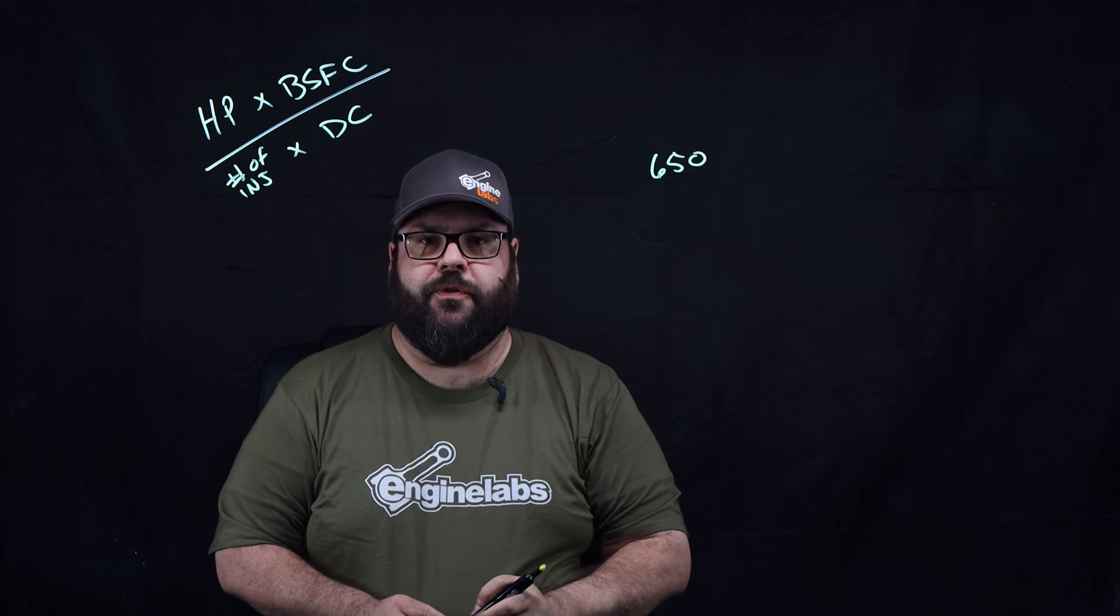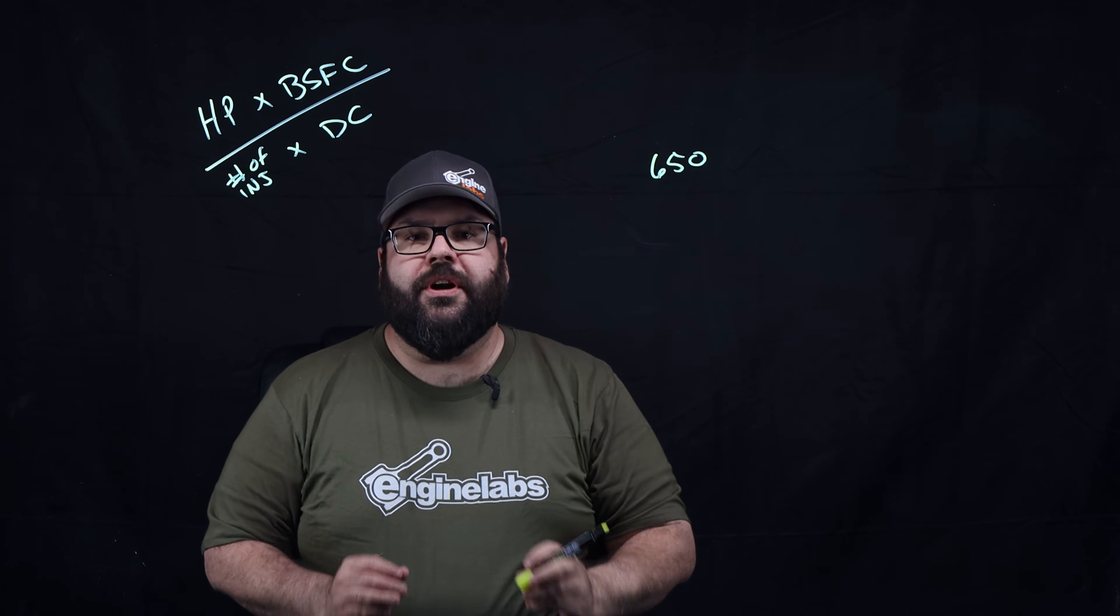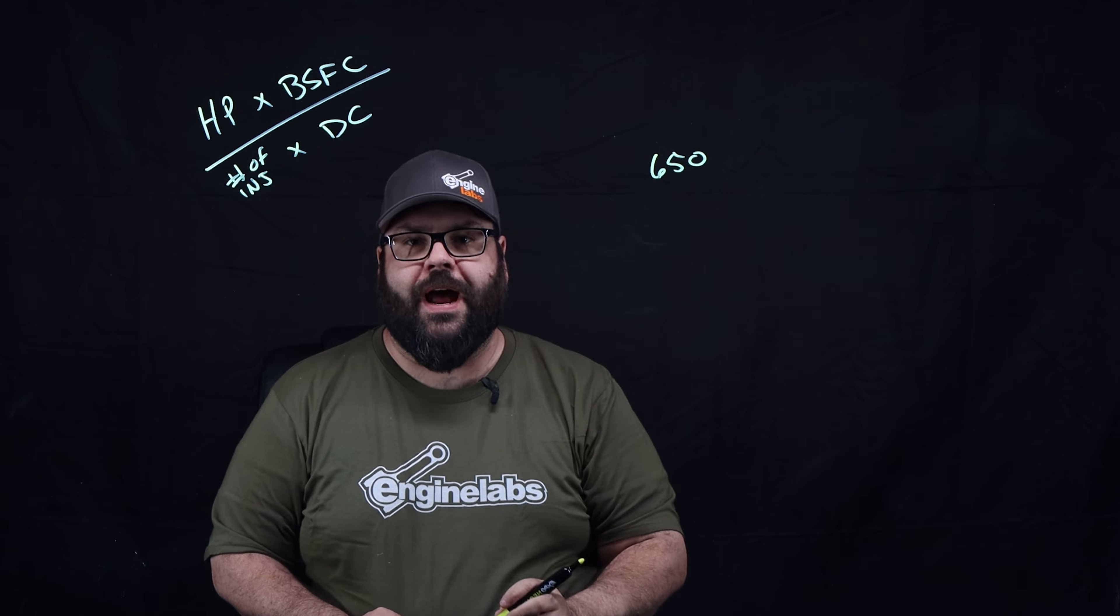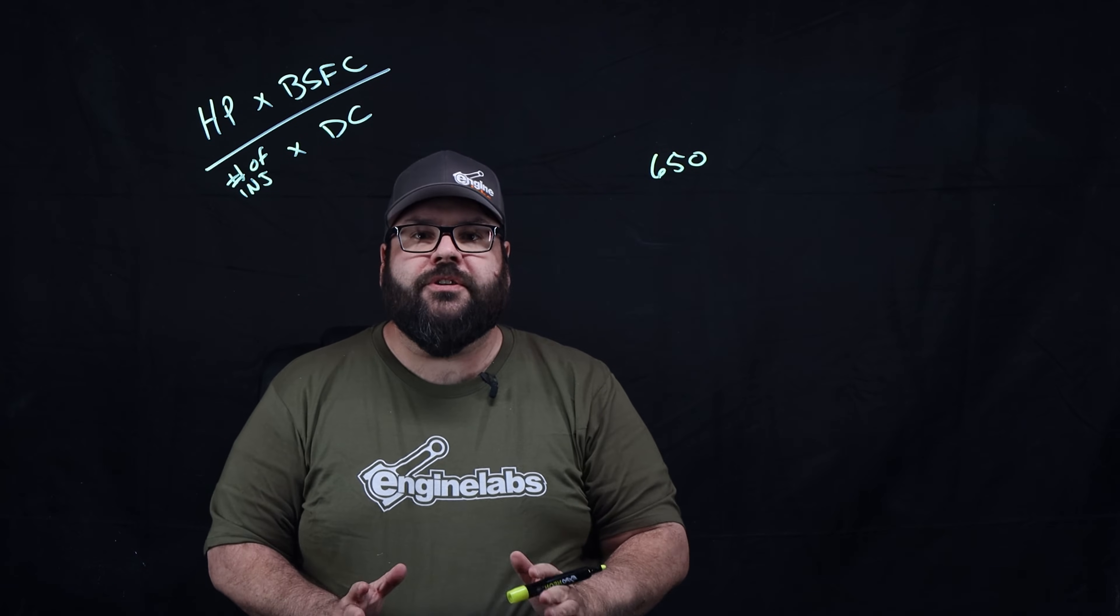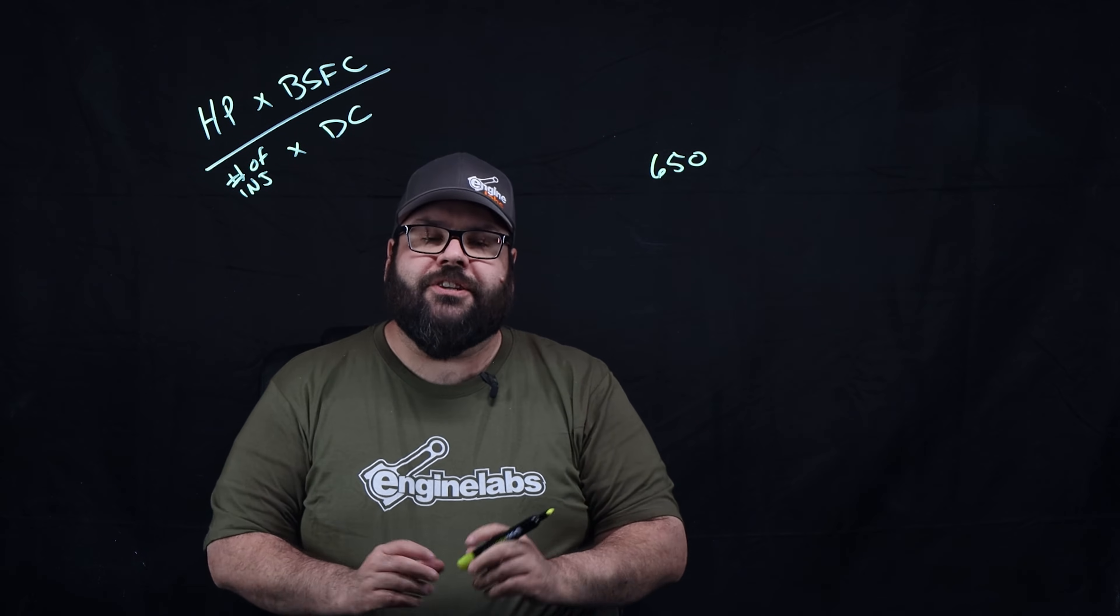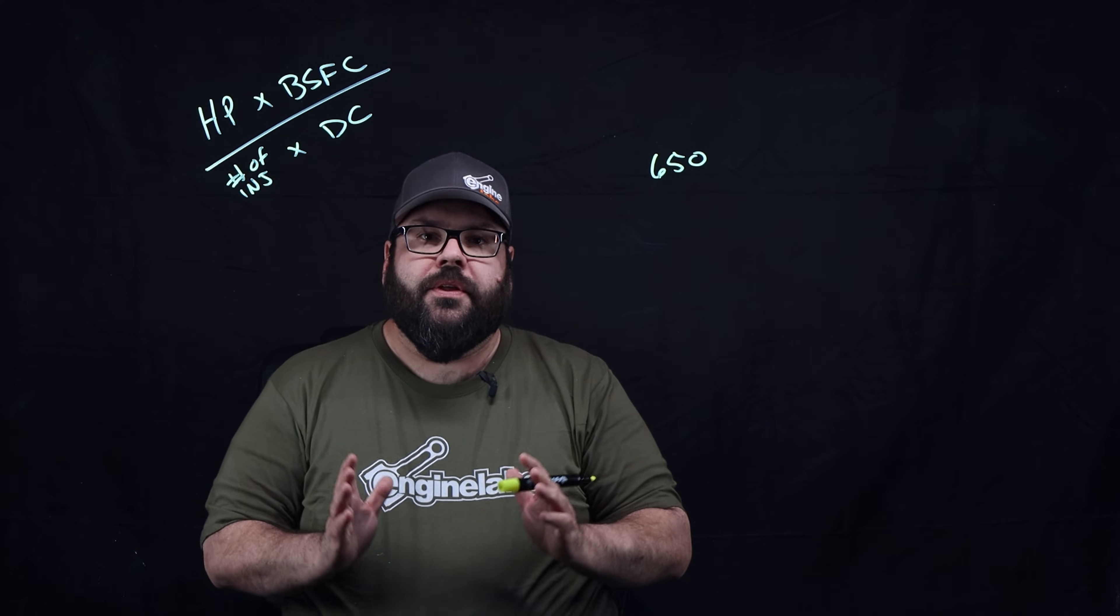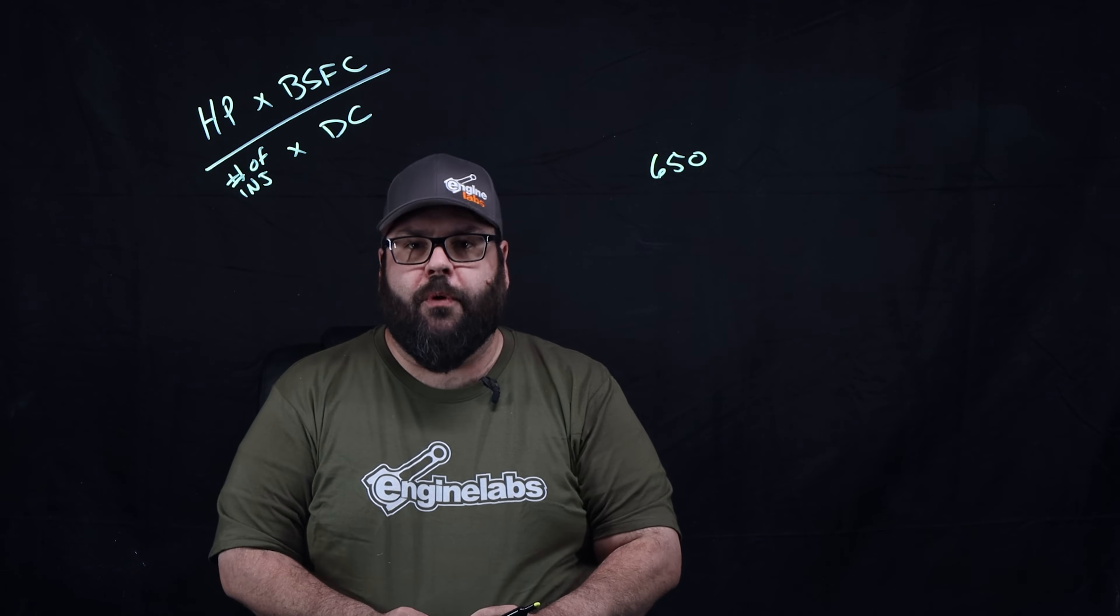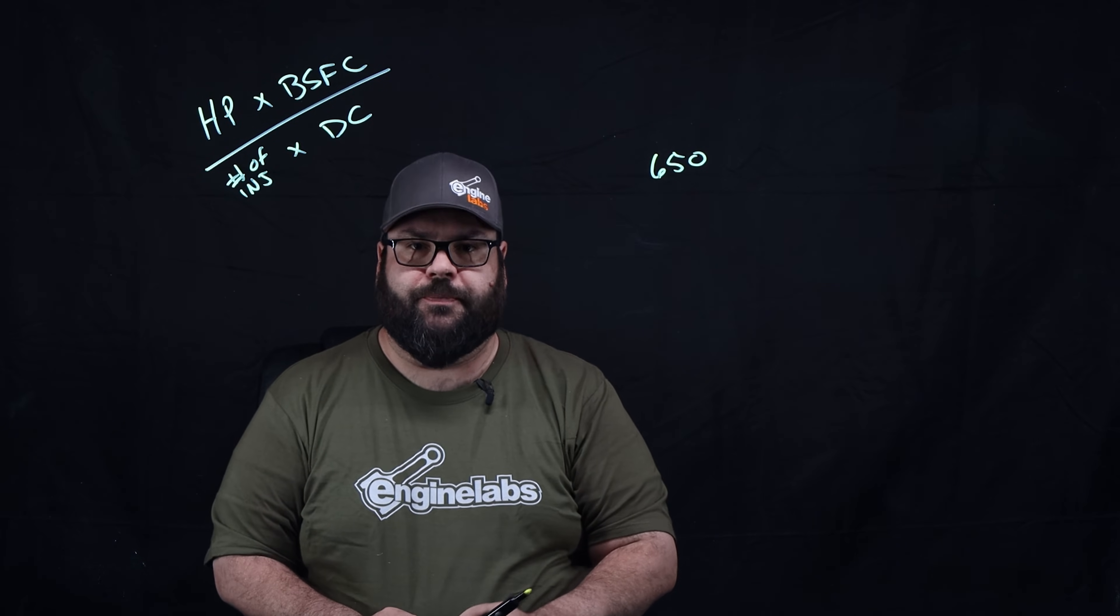Next is brake specific fuel consumption. This number is the pounds of fuel consumed per hour per horsepower by your engine. There are some rule of thumb numbers used for calculating things like this. For a naturally aspirated V8 engine, the figure is usually between 0.45 and 0.50 pounds per hour per horsepower.